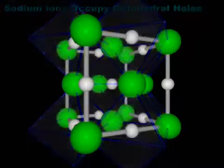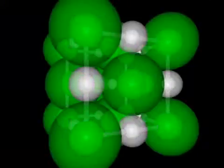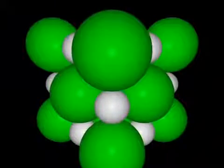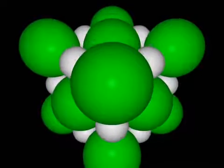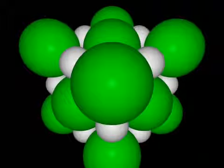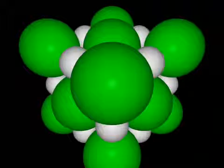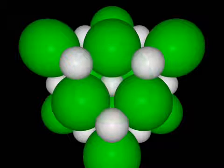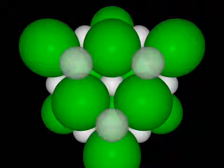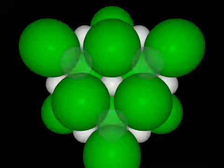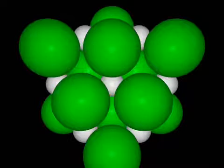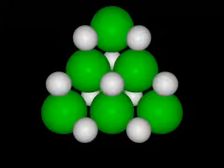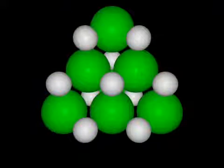We can gain a different perspective on this structure by examining a space-filling model. The structure is based on a face-centered cubic array of chloride ions, and therefore contains close-packed layers of chloride ions. By removing successive layers, we see that the sodium ions, as well as the chloride ions, form close-packed layers. The structure can therefore be described as alternating close-packed layers of sodium and chloride ions.